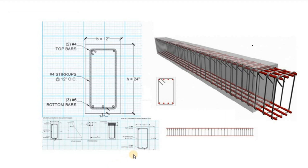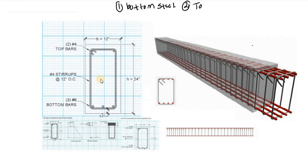If you take a look at the screen, we have a 3D view of a beam and we also have the cross-section of a beam. When we reinforce a beam, we provide steel inside the beam, and the steel is divided into three parts. The first one is the bottom steel, the second one is the top steel, and the third one is the transverse steel, or what we can also call stirrups.